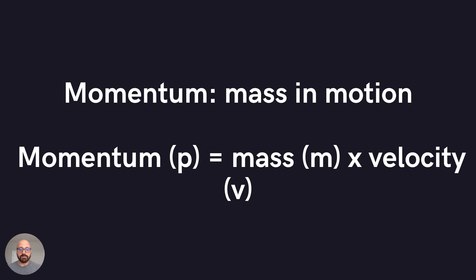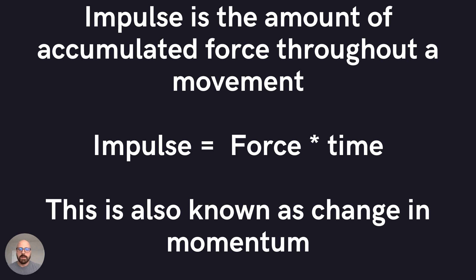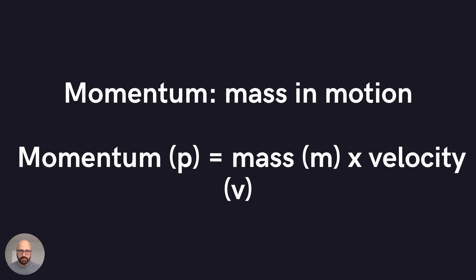Second law, the law of force. So the more momentum something has, the harder it is to stop. And in order to stop it, we need to apply an amount of force against its motion that's higher than that. So this leads us into impulse.